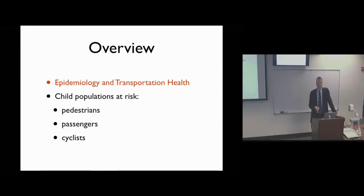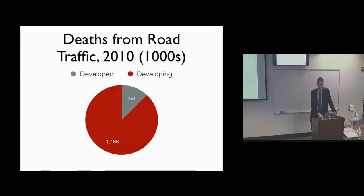Then I'm going to go through the different child populations. I'm going to focus on some of the research that I've done rather than giving the broadest overview. I'll talk about interventions that are effective for pedestrians who are most at risk everywhere, for child passengers in automobiles who aren't particularly well protected, and for cyclists because that should be a growing area of healthy activity.